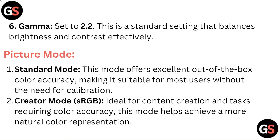Gamma: set to 2.2. This is a standard setting that balances brightness and contrast effectively. Picture Mode — Standard Mode: this mode offers excellent out-of-the-box color accuracy, making it suitable for most users without the need for calibration.